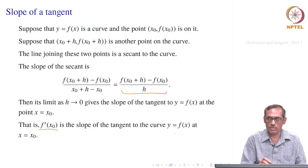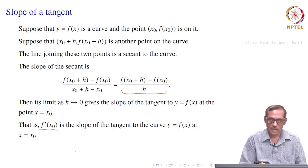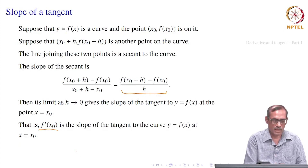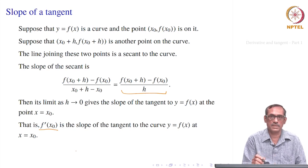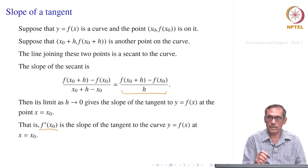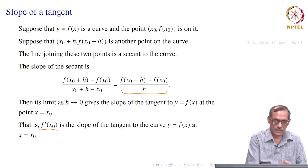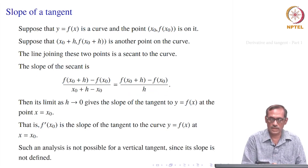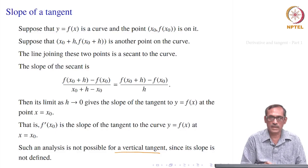This works when everything goes well. There are cases where this fails — for example, when the limit does not exist, or it blows up to infinity, which is also a case of non-existence. When it blows up, the slope becomes infinity, meaning the straight line makes an angle of π/2 with the x-axis — that is a vertical tangent. For a vertical tangent, the slope is not defined in this way.